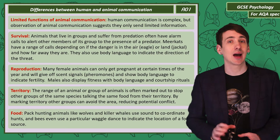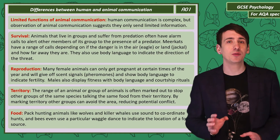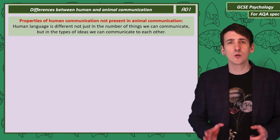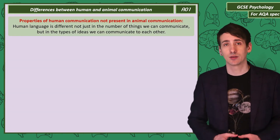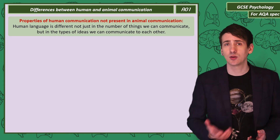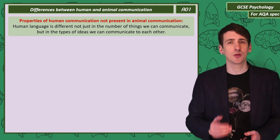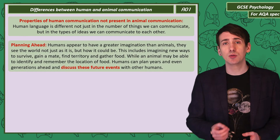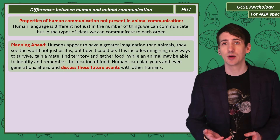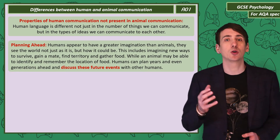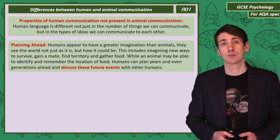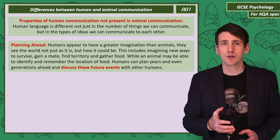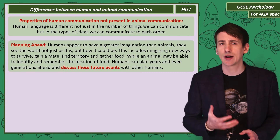While animal communication can be impressive, there are some fundamental differences between human and animal communication. We can use language to talk about a wide number of topics, not just those linked to survival and reproduction. But it's not just the number of topics — it's how we talk about them that's different. While animals communicate in response to the world around them, humans can imagine how the world could be and talk about that. For example, animals might sound an alert about a predator, but humans can think about what they can do to avoid predators in the future.